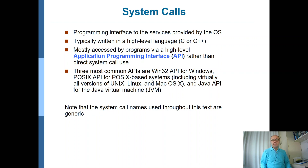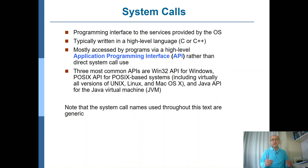Application programs access system services either through an application programming interface (API) or through direct system calls. In general, the preference is to use the API — typically your programming language libraries. For example, in C you use the standard library (libc) for basic I/O operations. It is also possible to make system calls directly, but that is more tedious and error-prone. The API hides all that detail from the programmer, handles error checks, and is much easier to use.